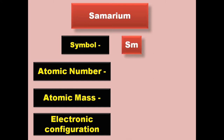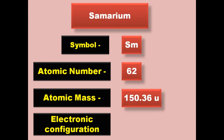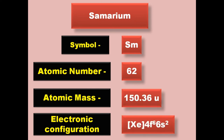Samarium has symbol Sm, atomic number 62, atomic mass 150.36, electronic configuration [Xe] 4f6 6s2. Samarium is a lanthanide and exists in solid form at room temperature.